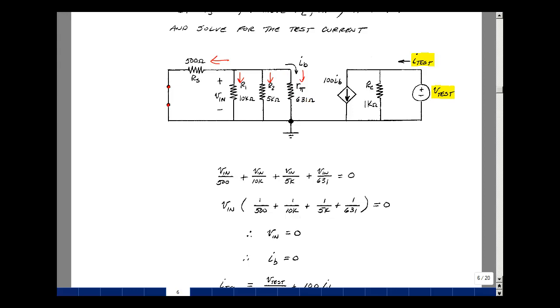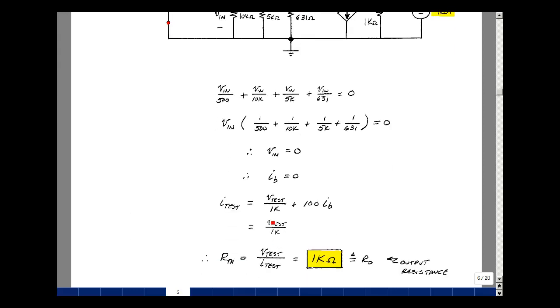So the current coming in here is going to be this current, which is V-test divided by 1k, plus zero times 100. So we just have V-test divided by 1k. Rearranging terms, V-test divided by I-test equals 1k, and that's our Thevenin resistance.